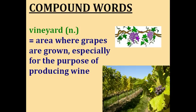Vineyard. A vine is a type of plant that climbs up a surface as it grows, and grapes grow on vines. A yard is an area of land. So a vineyard is an area where grapes are grown, especially for the purpose of producing wine.